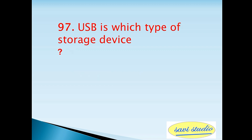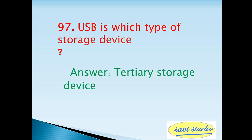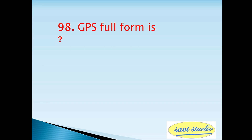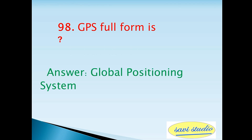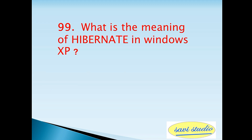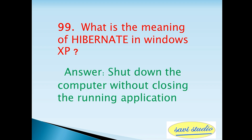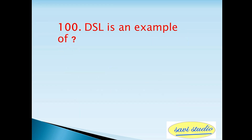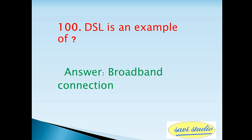Ninety-seventh question: USB is which type of storage device? Answer: tertiary storage device. Ninety-eighth question: GPS full form is — answer: Global Positioning System. Ninety-ninth question: what is the meaning of hibernate in Windows XP? Answer: shut down the computer without closing the running applications. Hundredth question: DSL is an example of — answer: broadband connection.